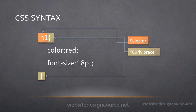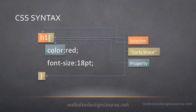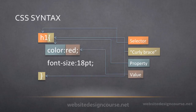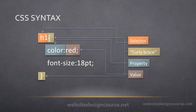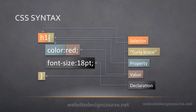The next two pieces here are what I call curly braces, and they simply define the declaration set. The next piece is what we call the property. In CSS, the property is followed by a colon, and the value is followed by a semicolon. Make sure you understand the distinction there. The entire property and value set together is what we call a CSS declaration.